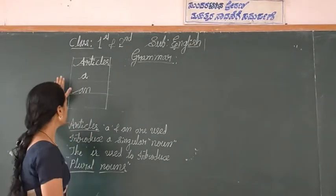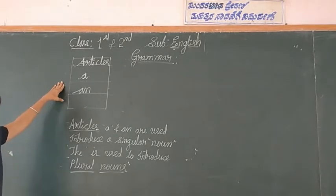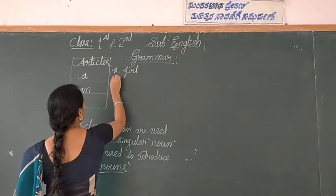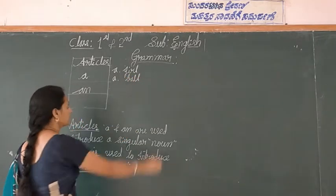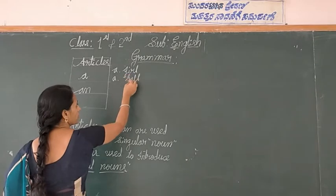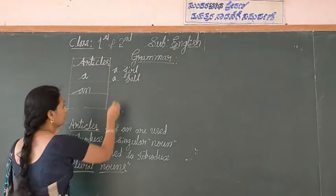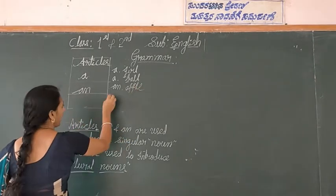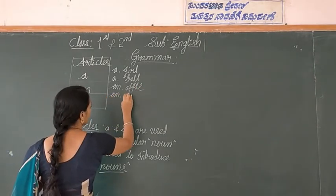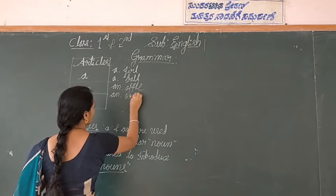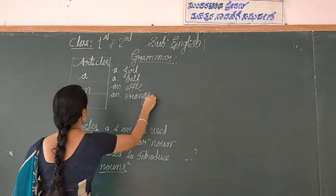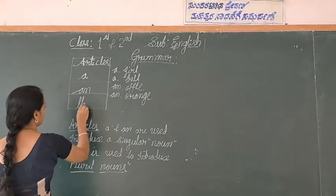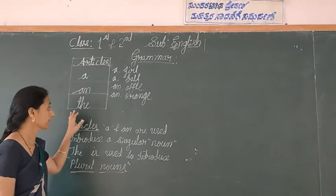Next, come to the grammar articles: 'a', 'an', and 'the'. For example: a girl, a ball - the first letter is a consonant, so we use 'a'. When we use 'an': an apple, an orange. The third article is 'the'. So first is 'a', second is 'an', third is 'the'.